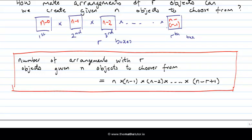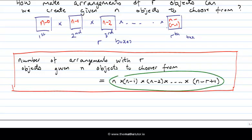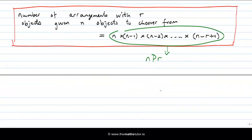So the number of arrangements of r objects given n objects to choose from is n times (n minus one) times (n minus two), all the way down to (n minus r plus one). This is like a factorial expression except that instead of continuing the product all the way down to two times one, we stop at n minus r plus one. This expression has a name and notation: nPr. So nPr stands for the number of arrangements of r objects given n objects to choose from, and that is the formula for it.